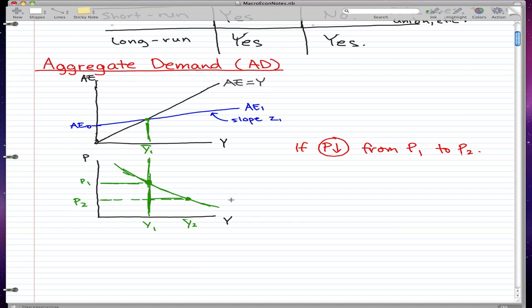This line I drew is our aggregate demand curve. Coming back to our question, if P, the price level, falls from P1 to P2, what do you think will happen?